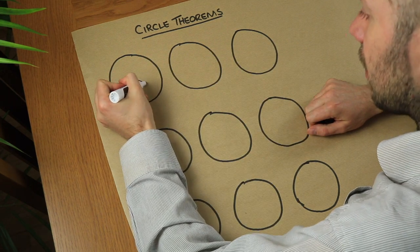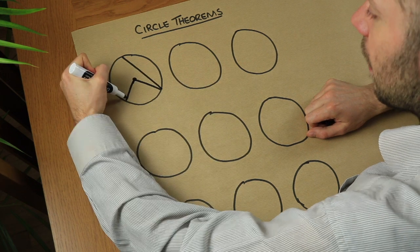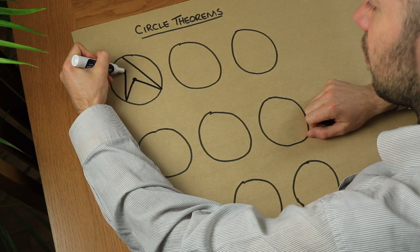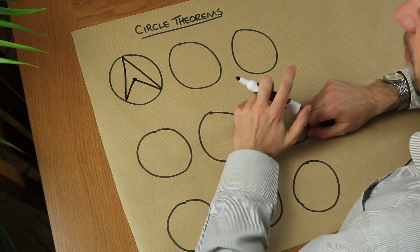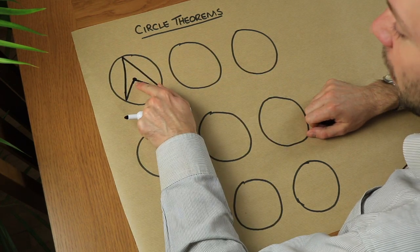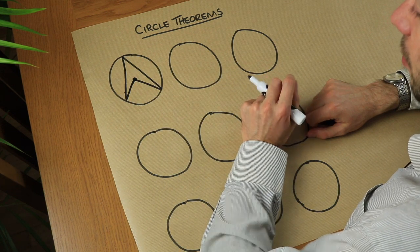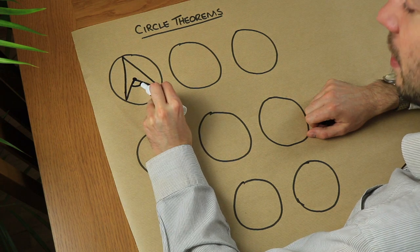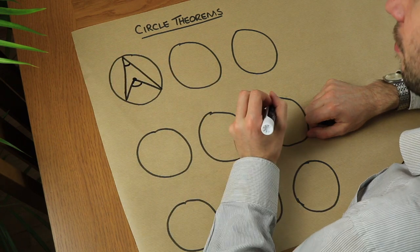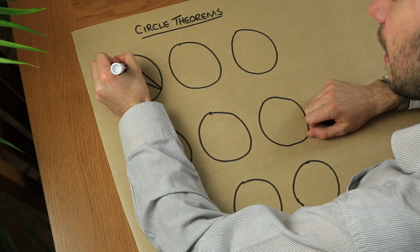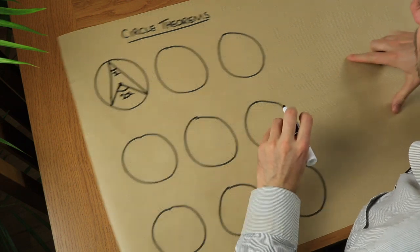Let's suppose that's the centre of the circle and we have two lines to the circumference of the circle, then we join these points up to the circumference. We get this almost Star Trek logo type shape, and we've got an angle at the centre of the circle and an angle at the circumference. The angle at the centre is double the angle at the circumference, so if this was x then that would be 2x.